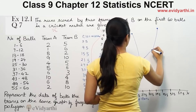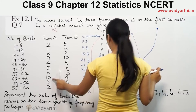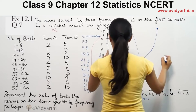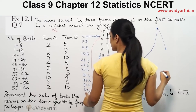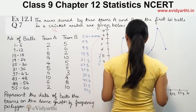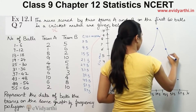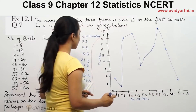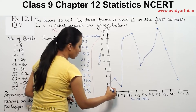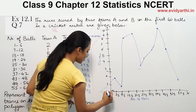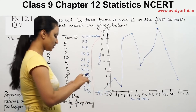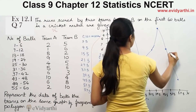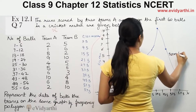At 51.5 frequency is 6, then at 57.5 frequency is 7. So all the points for Team A have now been plotted on the graph. This completes the plotting for Team A.